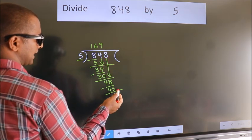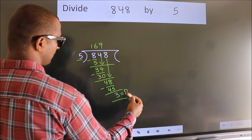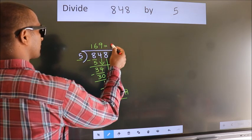No more numbers to bring it down. So, we stop here. This is our remainder. This is our quotient.